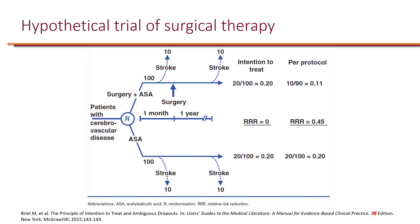Let's take a look at an example. We conduct a study and enroll patients with cerebrovascular disease — patients who are at risk of having a stroke. We randomize patients to two groups. The control group receives aspirin to see how effective it is at preventing stroke. The intervention group receives aspirin plus surgery to prevent stroke. We then measure how many patients have a stroke. In each group, 10 patients have early stroke and 10 have late stroke, and each group has about 100 patients.